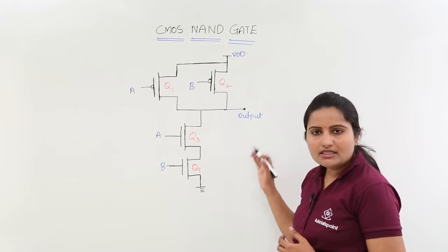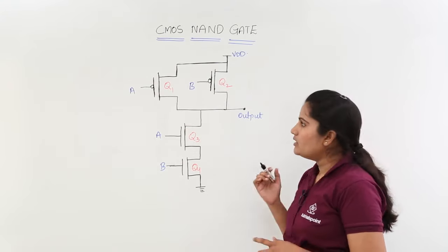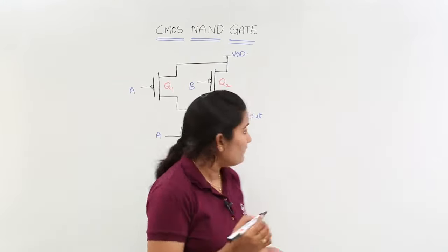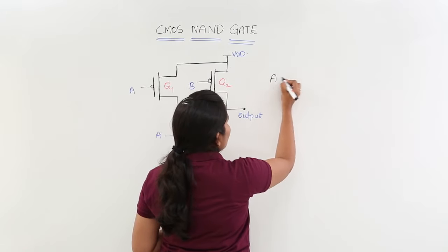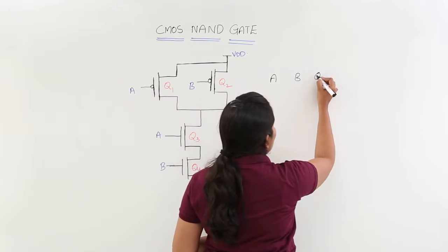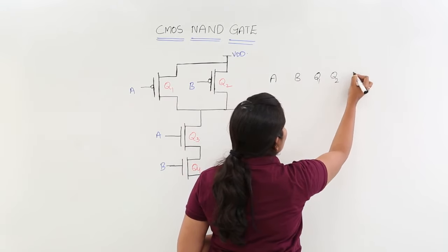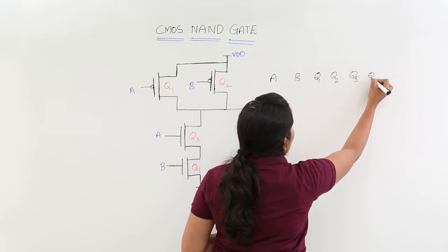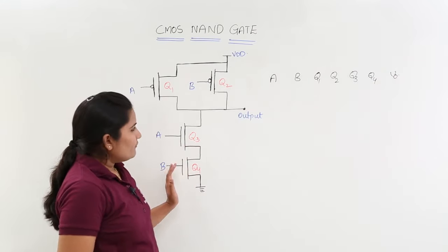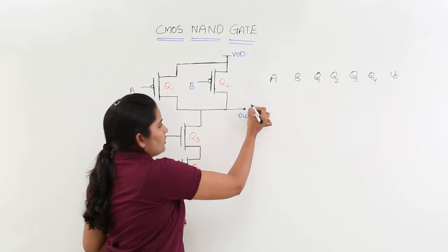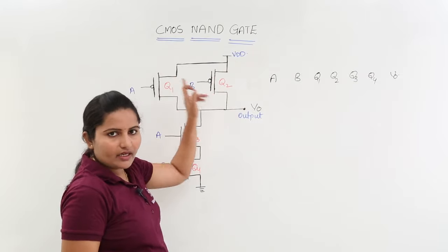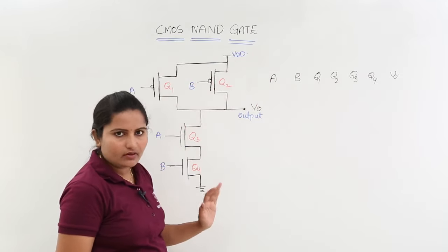Now we will see whether it works as a CMAS NAND or not. For that I am considering AB values and transistors Q1, Q2, Q3, Q4 and output voltage V0. When your output V0 is equivalent to 1, it means whenever it is connected to VDD by any way, then only your output is equivalent to 1.